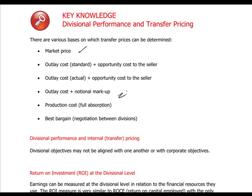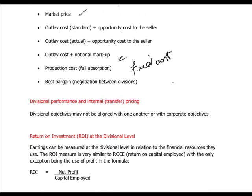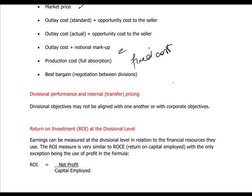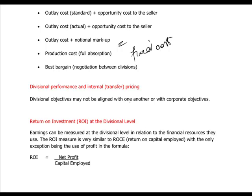Production cost plus markup is just like a cost-plus pricing strategy. Alternatively, full absorption production cost takes fixed costs into consideration, or best bargain — a negotiation between divisions — which is actually the best approach if it can be done. Divisional objectives may not be aligned with corporate objectives: one division might aim to maximize production capacity while another maximizes sales capacity, depending on their relationships and whether they have access to external markets.